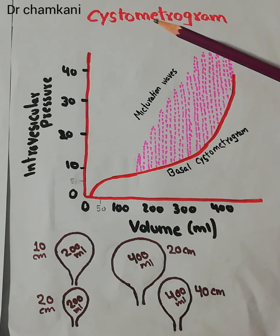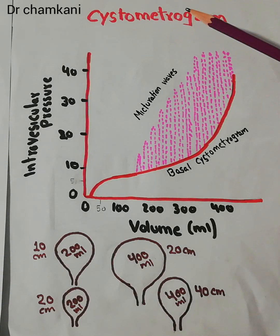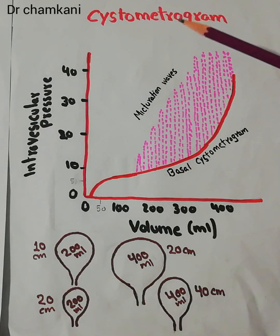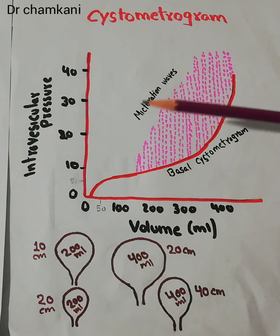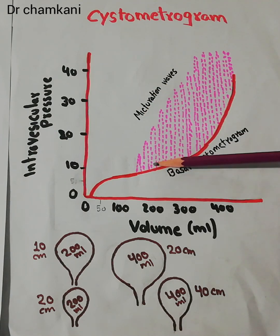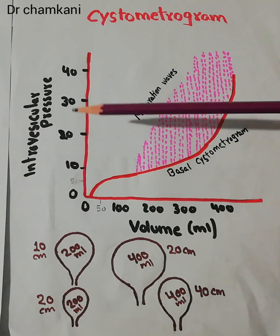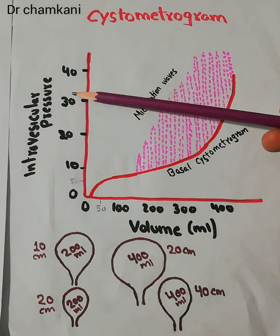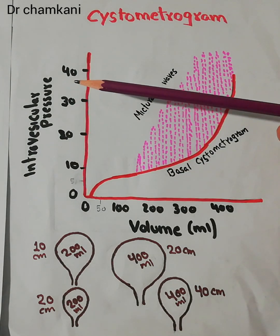Today we will talk about Cystometrogram. Cystometrogram basically shows the correlation of filling of the bladder with the increase in the bladder wall tone.